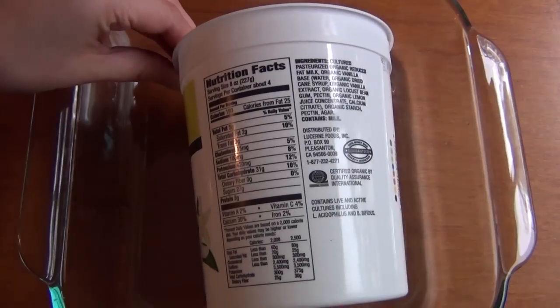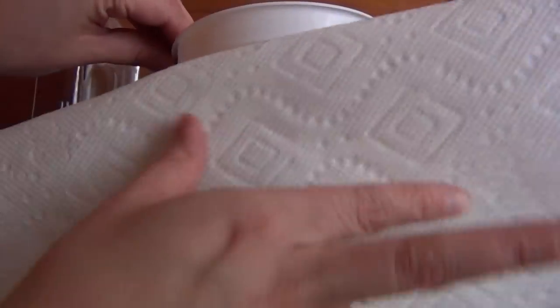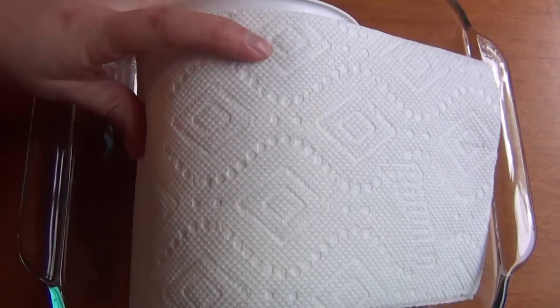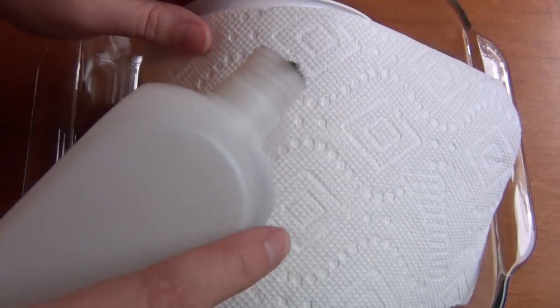To get started, just put your container inside the glass container that you're using. Place one of the paper towels or rags over it and pour the nail polish remover until the rag is saturated.